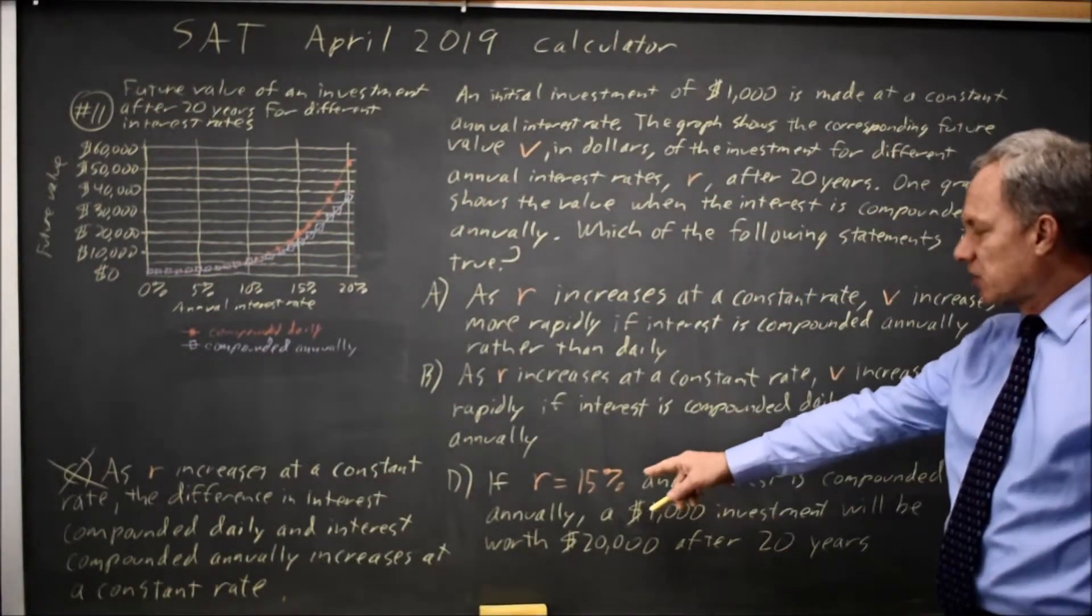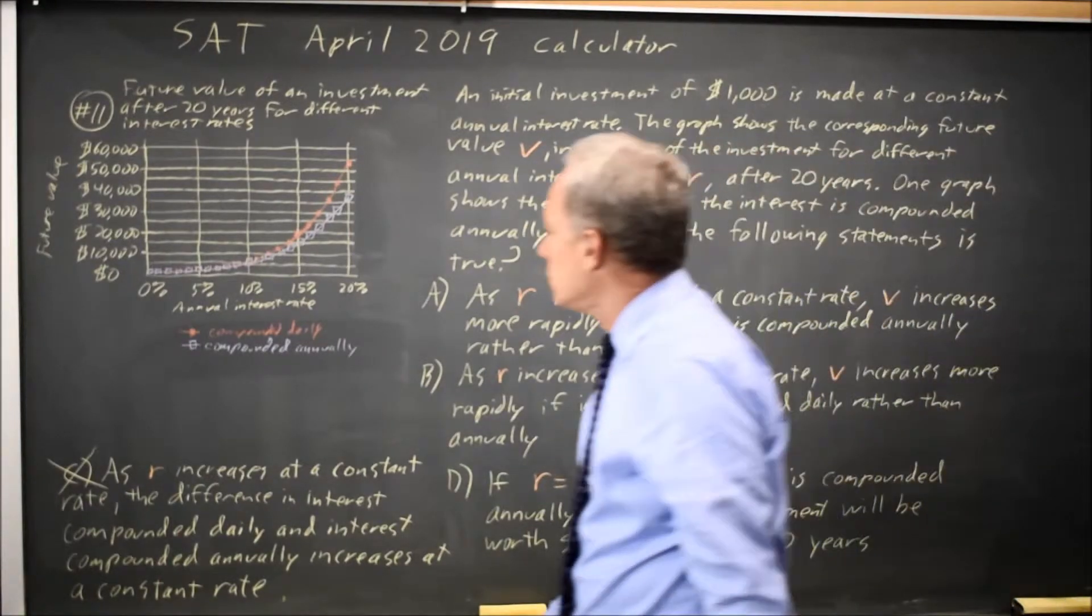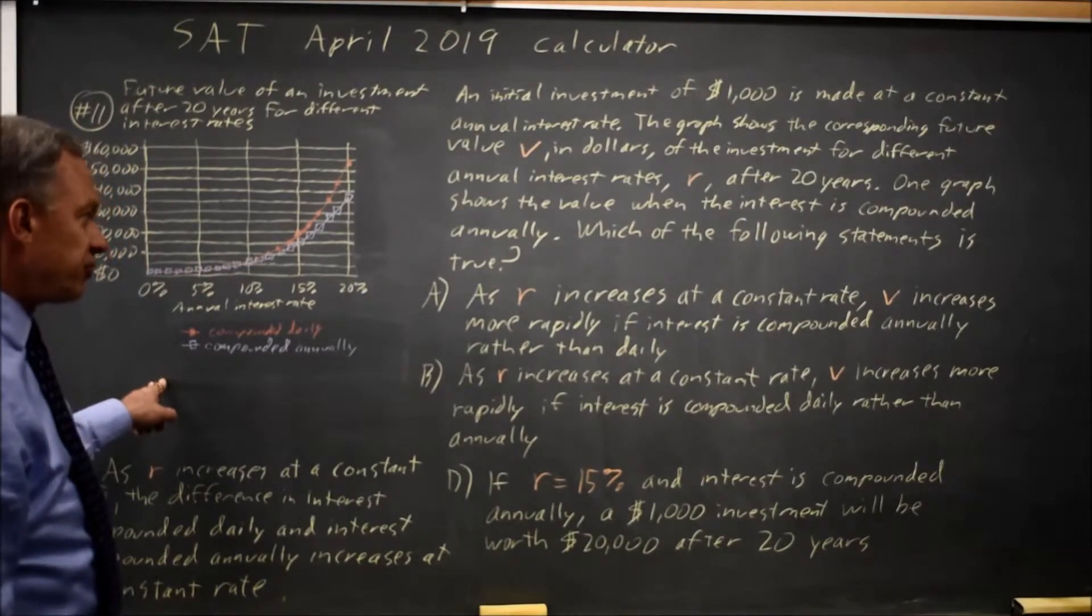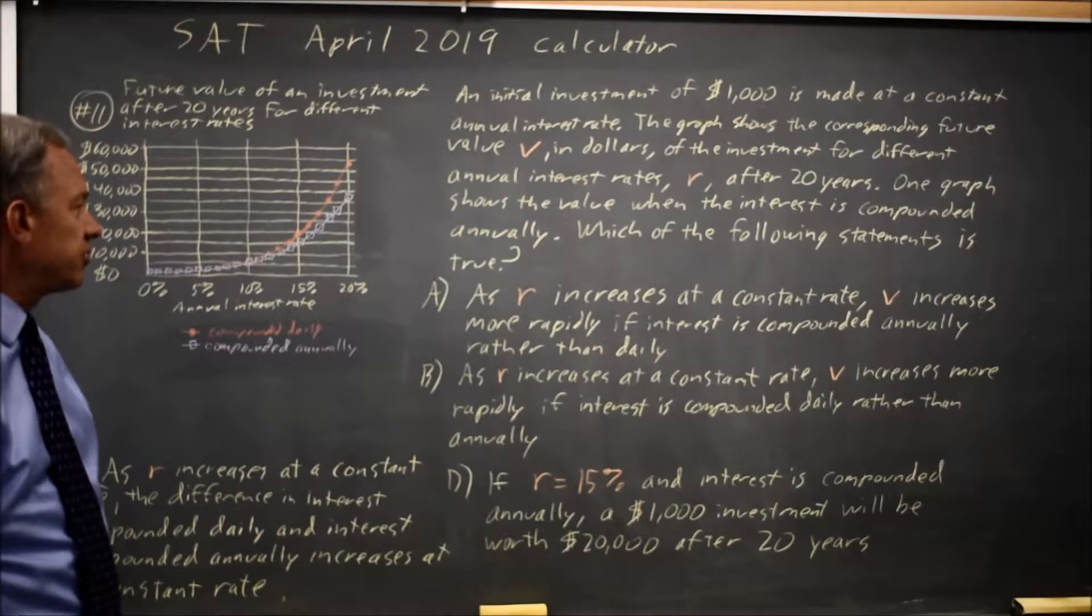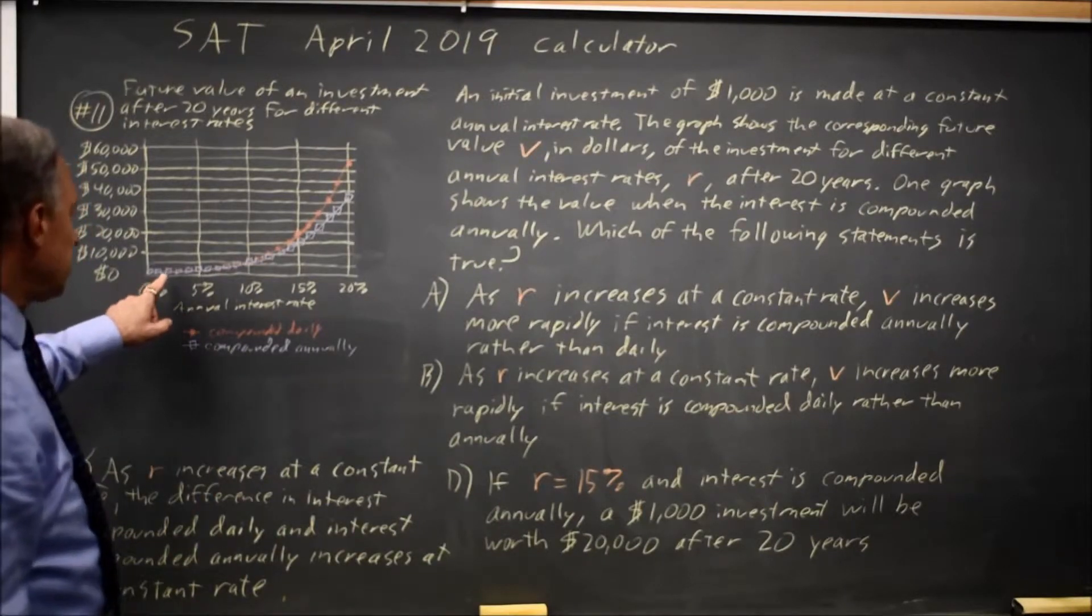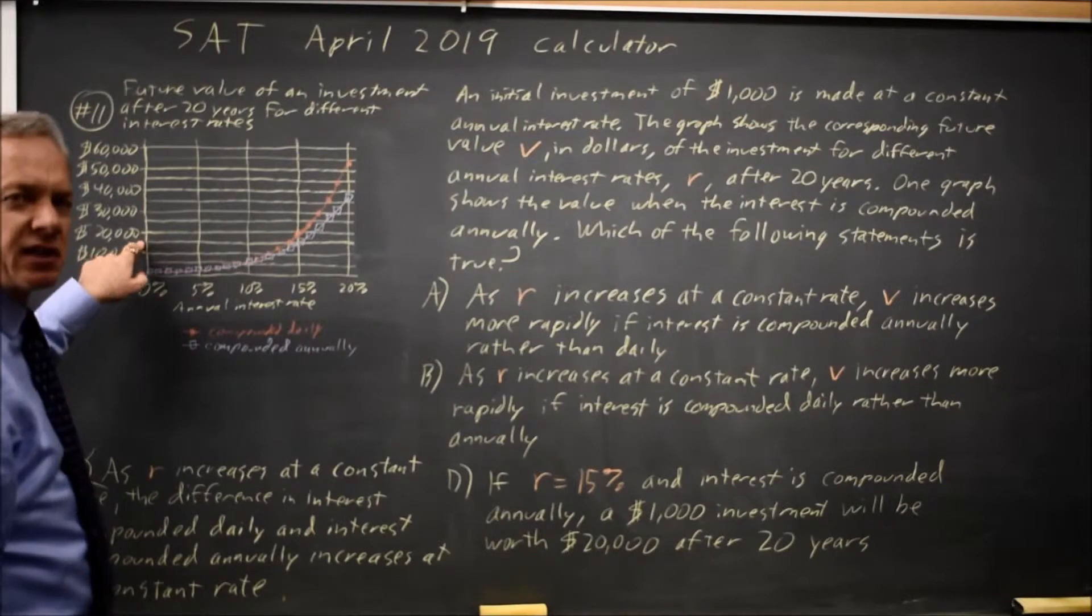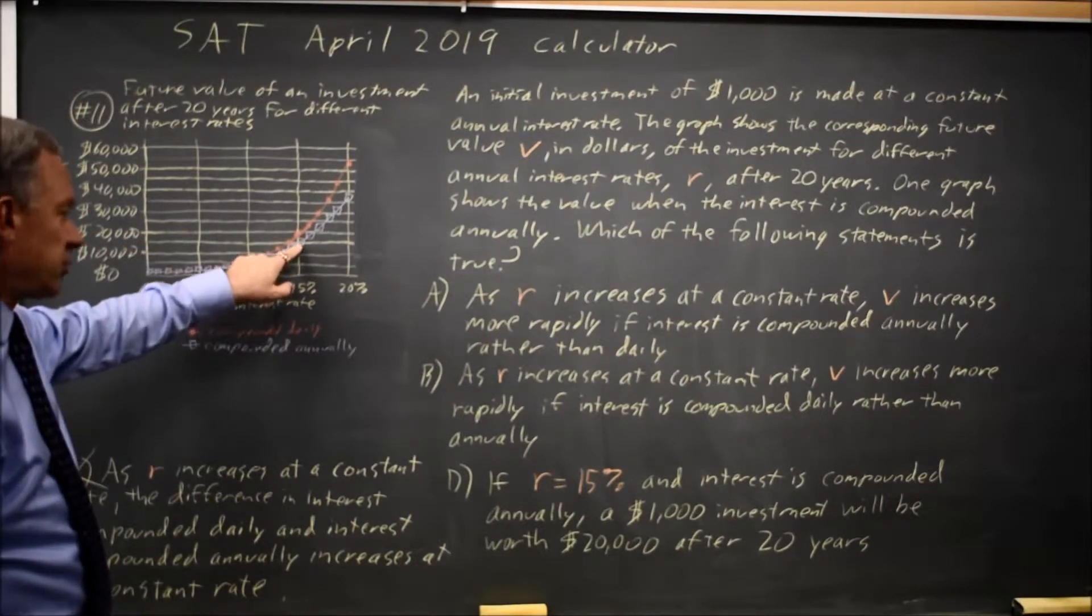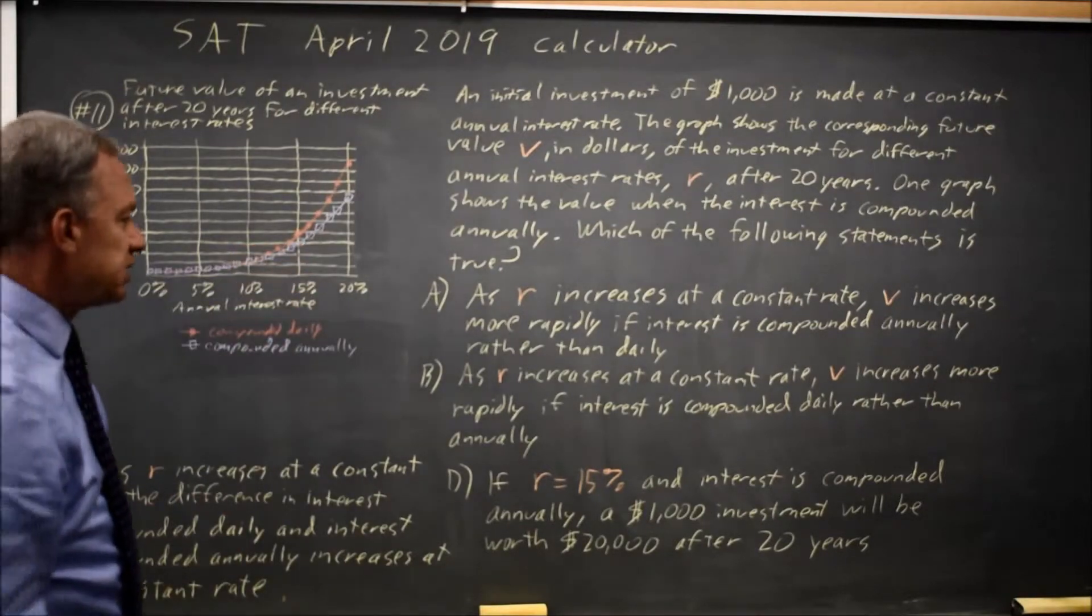Choice D says if R equals 15% and interest is compounded annually, which is purple, then a $1,000 investment will be worth $20,000 after 20 years. But if we look, the purple line is halfway between $10,000 and $20,000, which would be $15,000 for a 15% interest rate. So choice D is wrong.